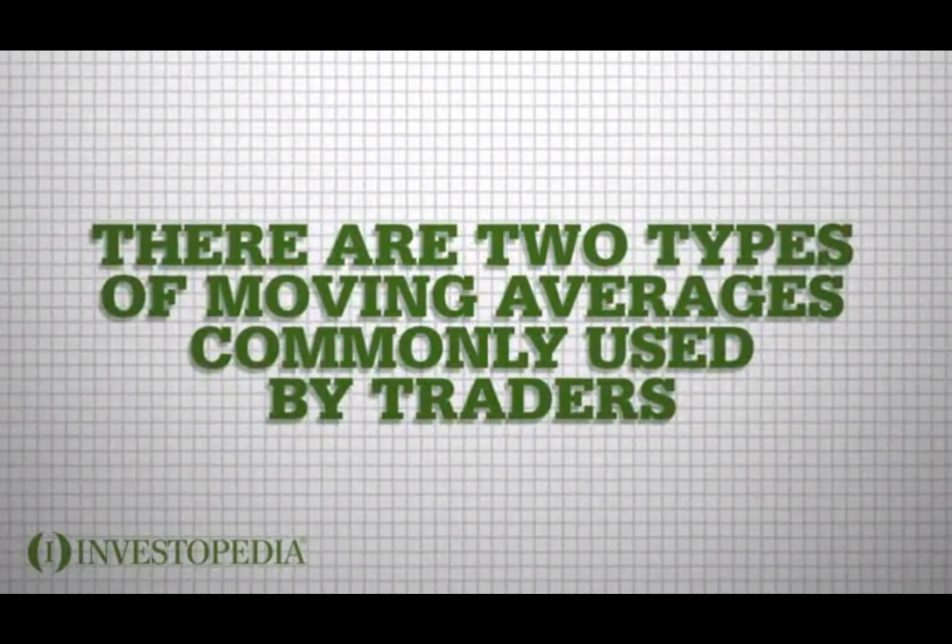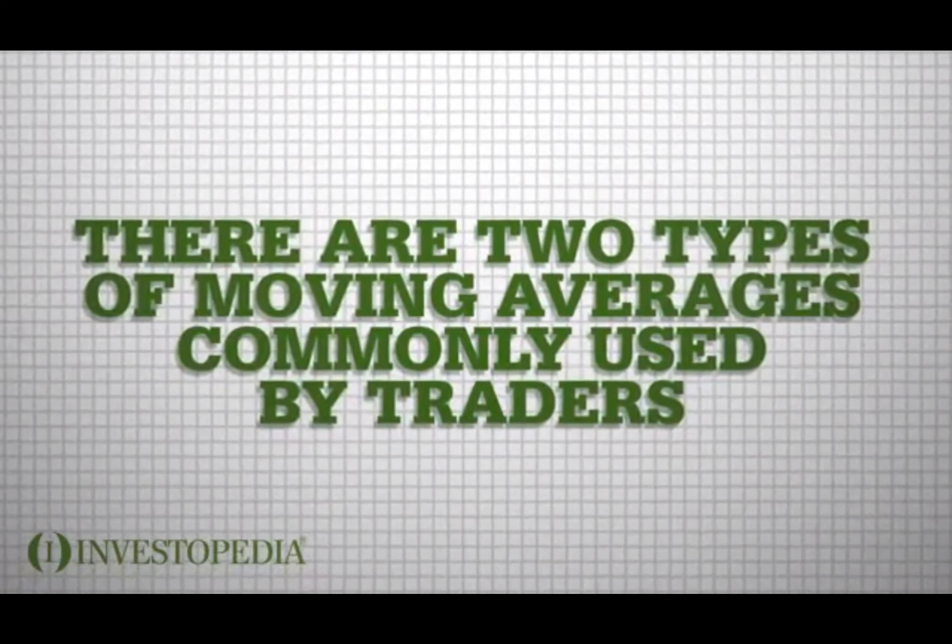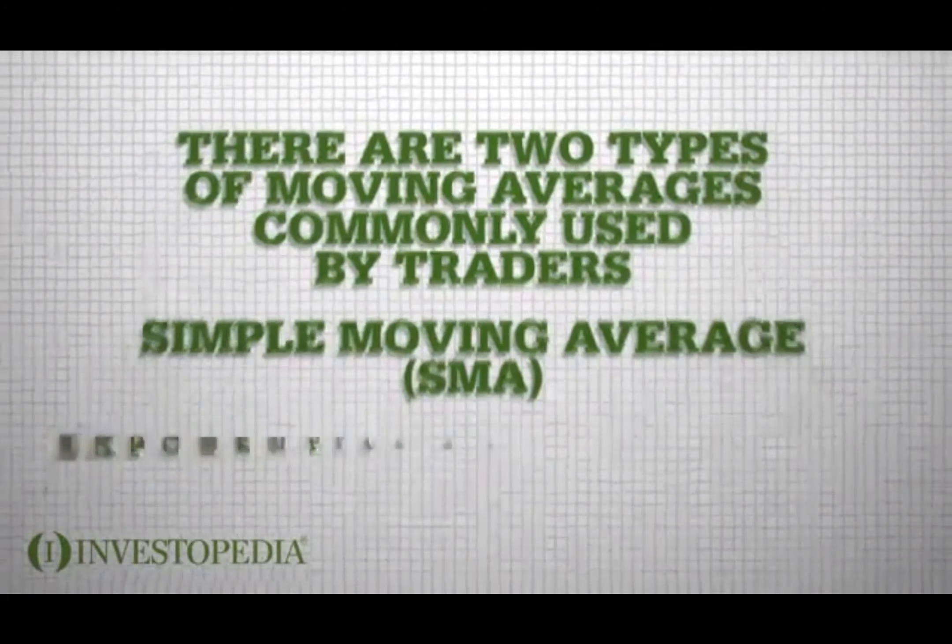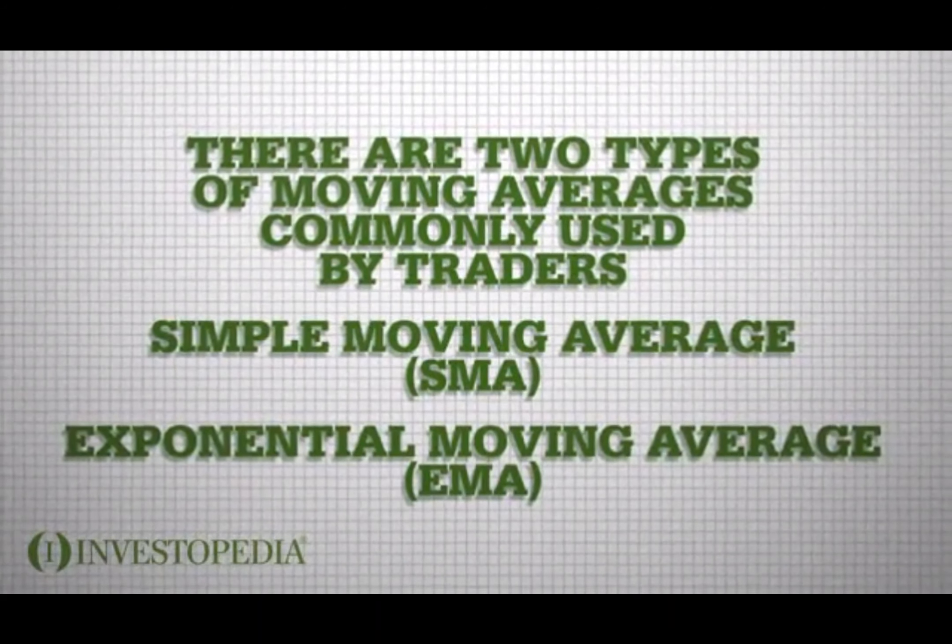There are two types of moving averages that are most commonly used by traders: the simple moving average, SMA, and the exponential moving average, EMA.